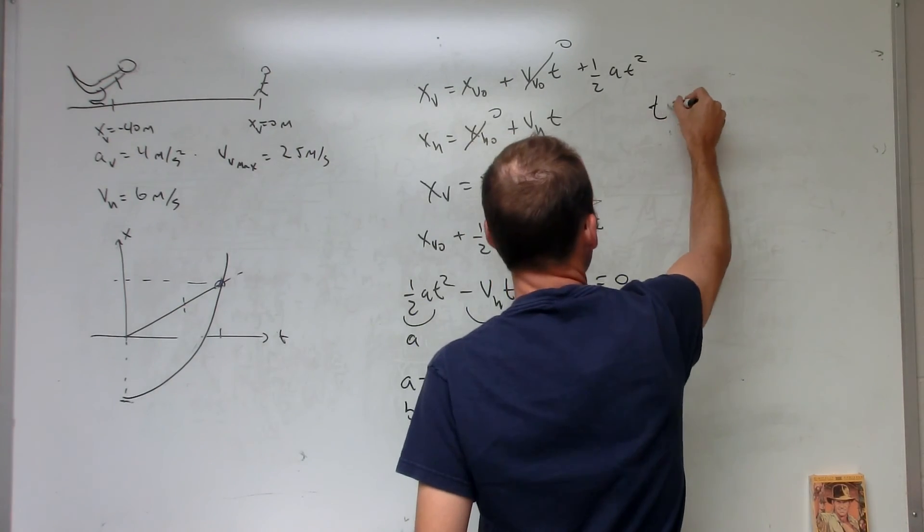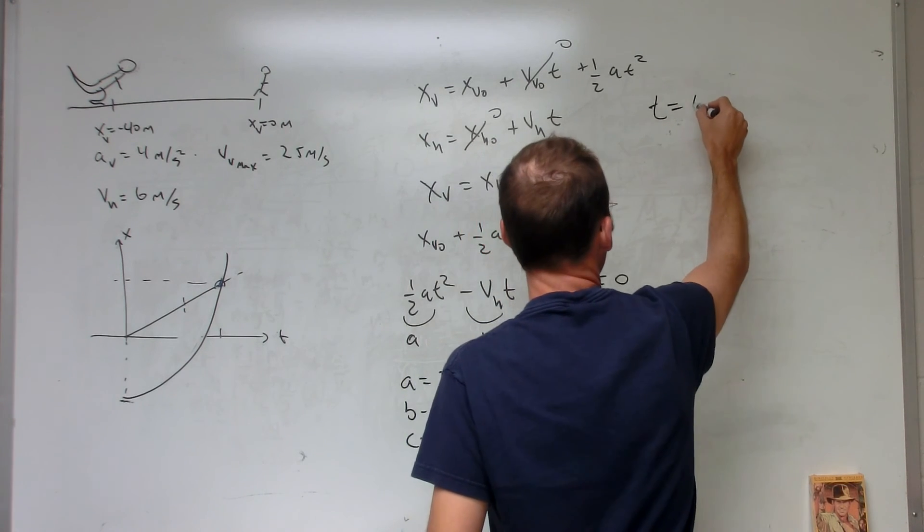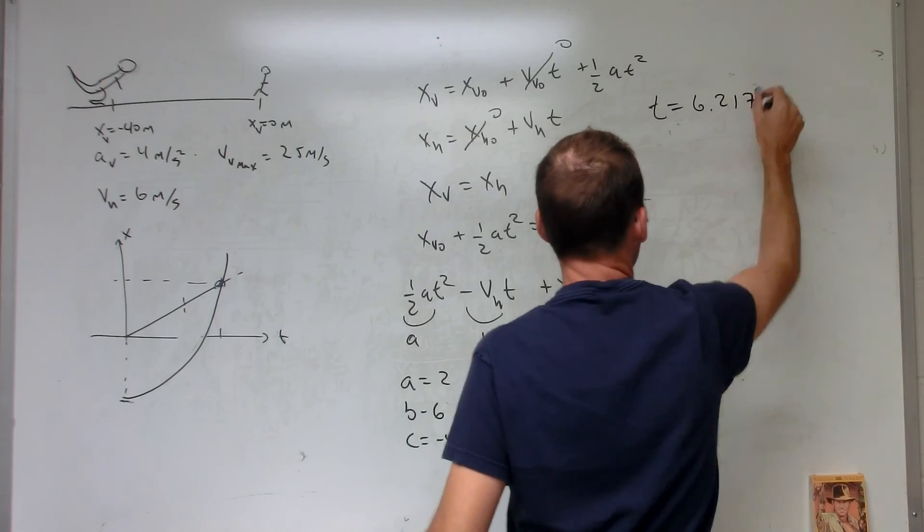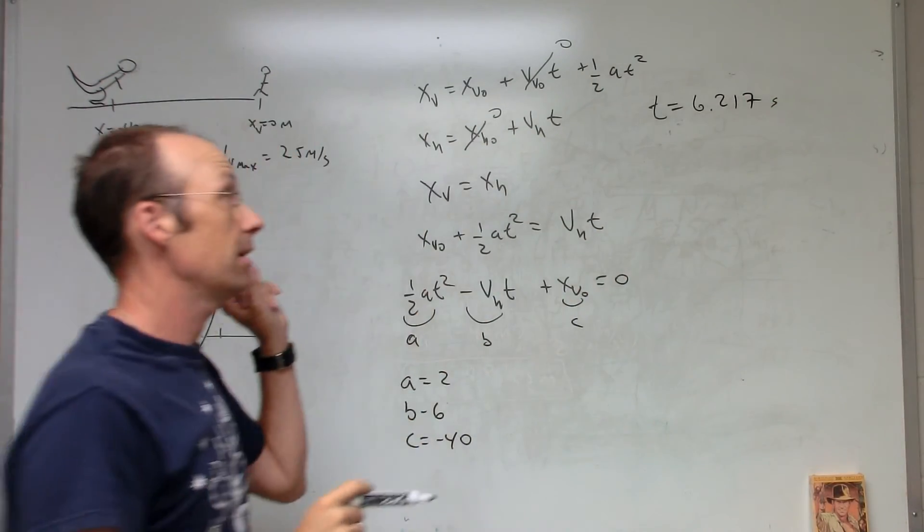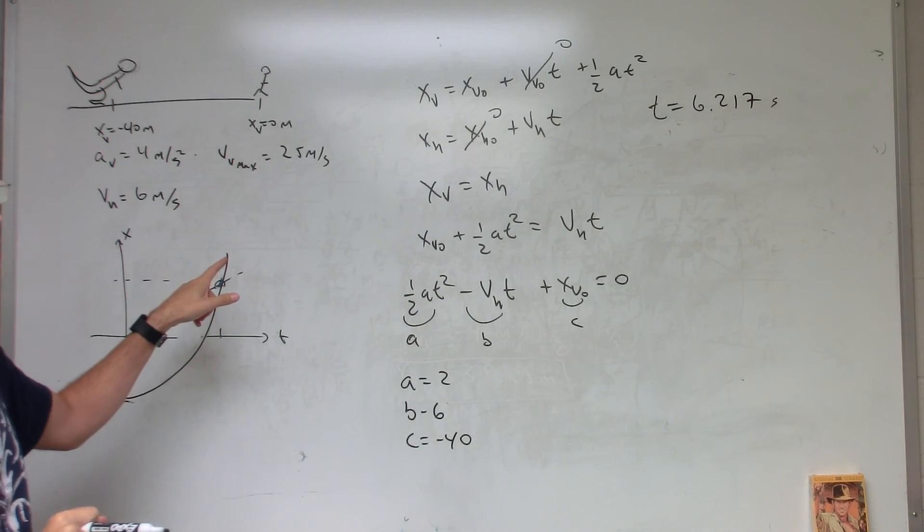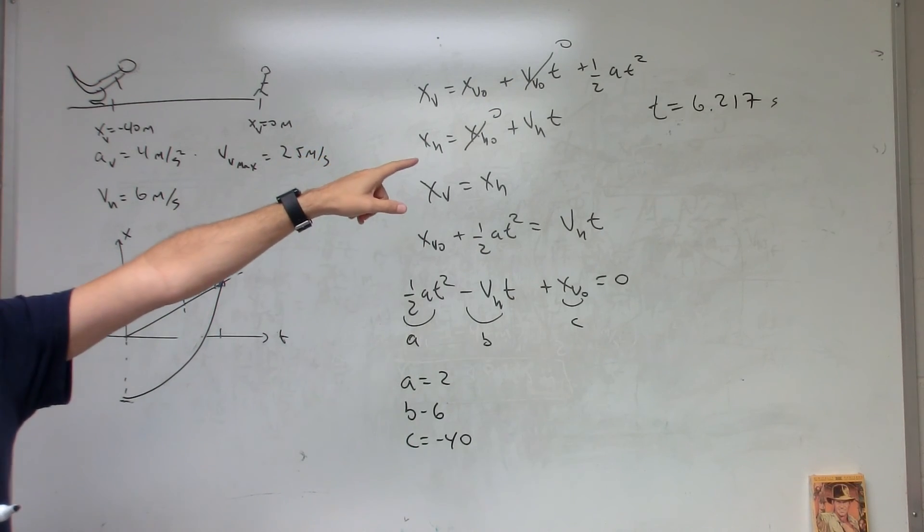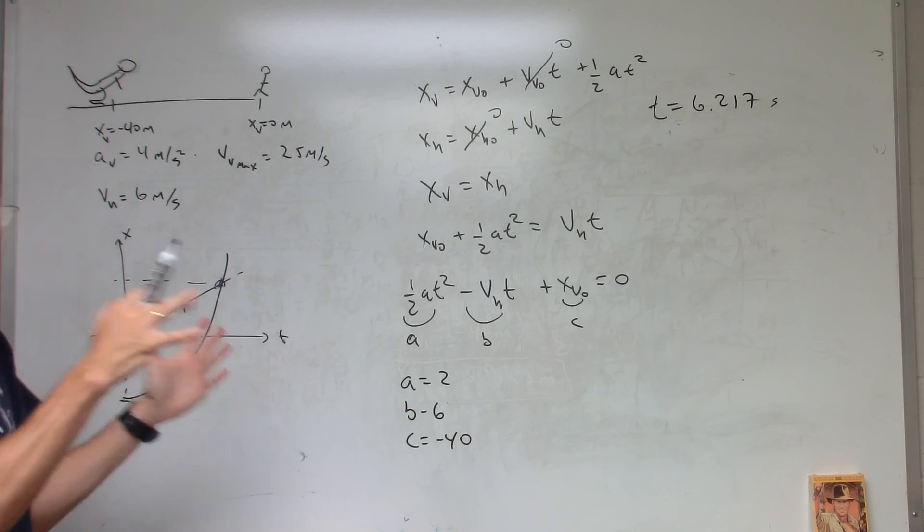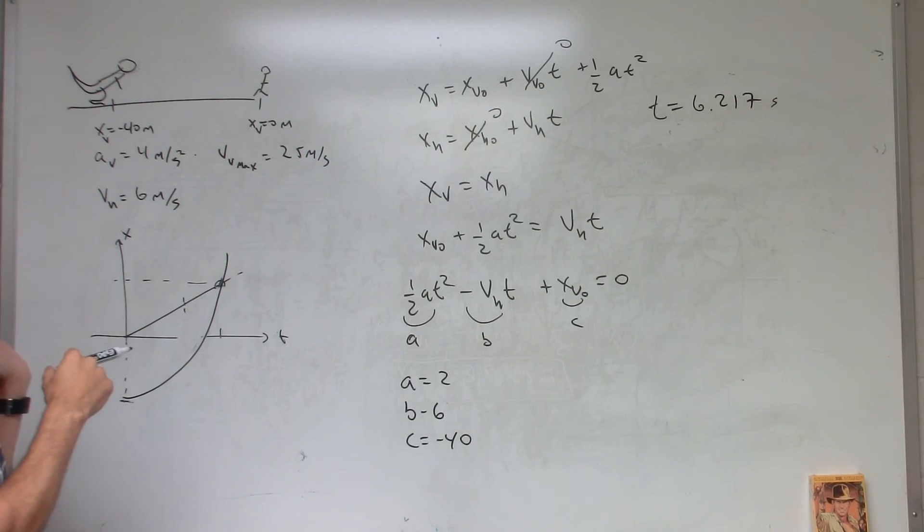And the other one is T equals 6.217 seconds. Now you'll notice that before we had the final velocity at 6.25. So this is right before that. That's good. If I had gotten the time later, then I made a mistake in my first part.